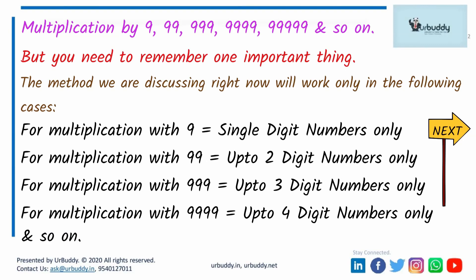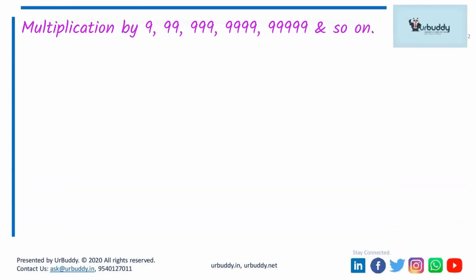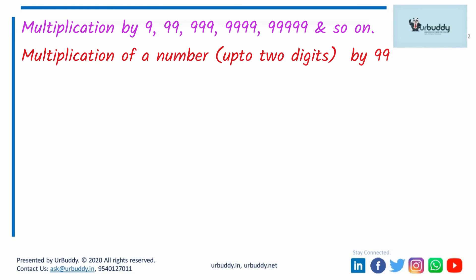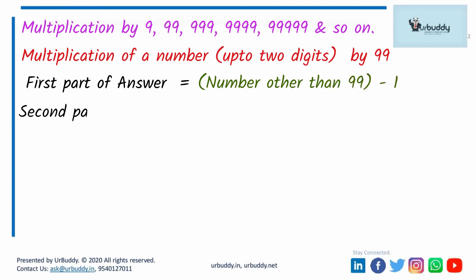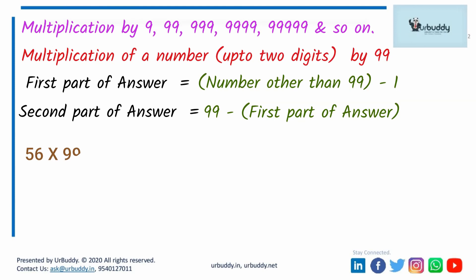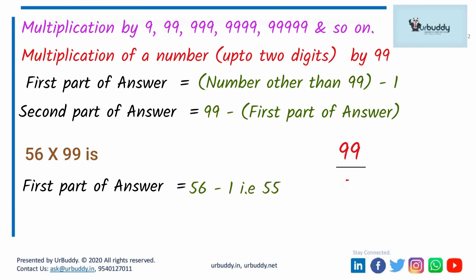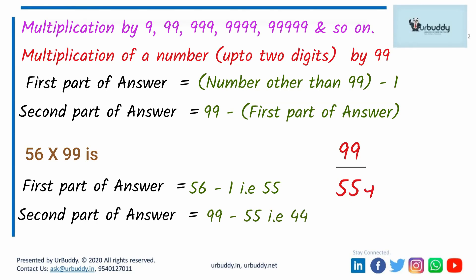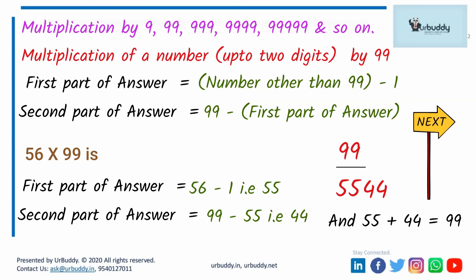When multiplying with 99, to get the first part of the answer subtract 1 from the other number. To get the second part, subtract the first part of the answer from 99. For example, when you multiply 99 by 56: first part = 56 minus 1 = 55, second part = 99 minus 55 = 44, answer is 5544. To double-check, confirm the sum of both parts equals 99: 55 plus 44 is 99 — answer is correct.